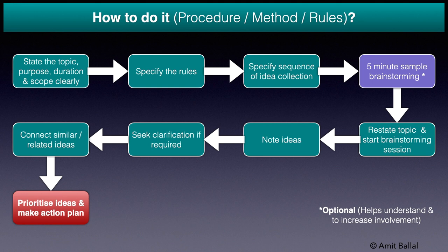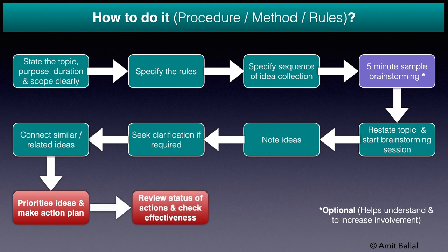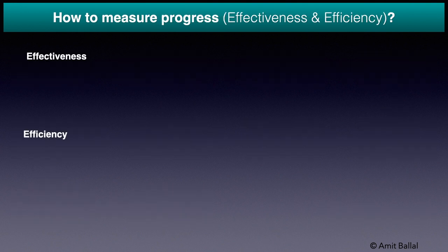Then prioritize the ideas and make an action plan if this is within scope — it can be covered in the brainstorming session itself or done separately later on. The last step is to review the status of the action plan and check its effectiveness to ensure the objective of the brainstorming session is achieved.